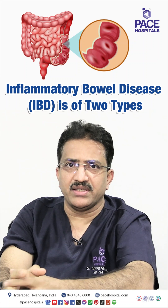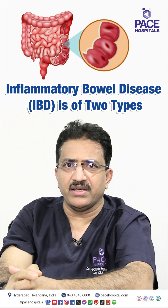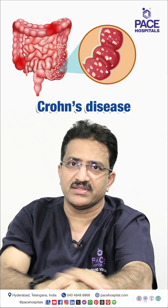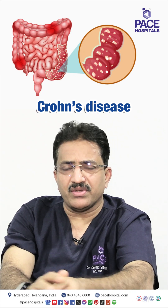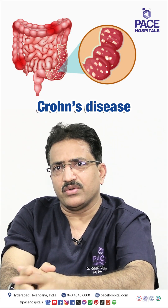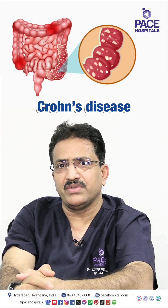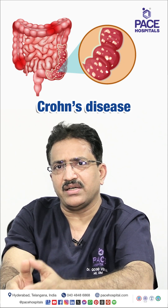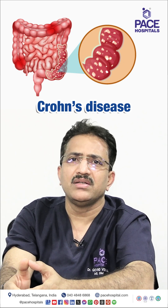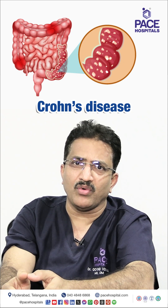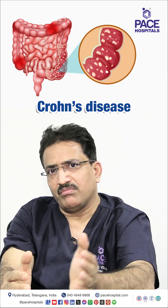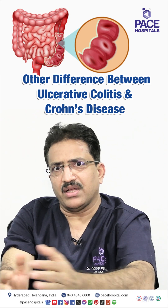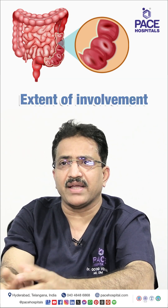Inflammatory bowel disease is divided into two types: ulcerative colitis and Crohn's disease. The big difference between them is the involvement of the gut. Ulcerative colitis involves only the colonic mucosa, whereas Crohn's disease can involve any part of the gut from mouth to anus.